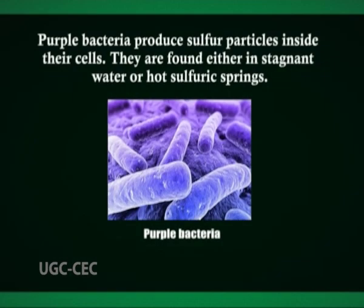Purple bacteria produce sulfur particles inside their cells. They are found either in stagnant water or hot sulfuric springs. Instead of using water to photosynthesize like plants and cyanobacteria, purple sulfur bacteria use hydrogen sulfide as their reducing agent. Because of this, they give off sulfur rather than oxygen.